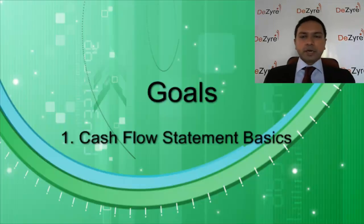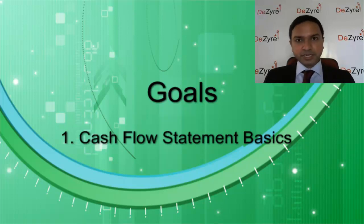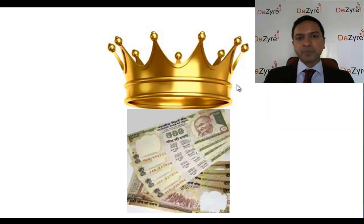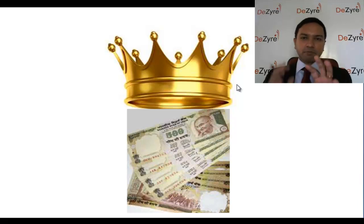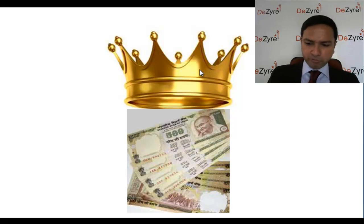Over the previous sessions you've looked at what the income statement is and how it explains the operations of a company. You've looked at what a balance sheet is and how it explains the financial aspects — the non-operational financial assets and liabilities of a company. What the cash flow statement essentially does is it sits in between the balance sheet and the income statement, somehow connecting both, and I'll explain how that whole thing happens.